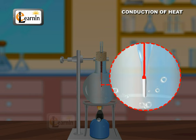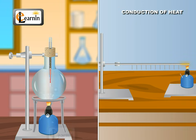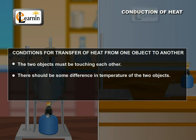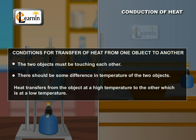So, the level of mercury does not increase further. Two conditions are to be fulfilled to transfer heat from one object to another by conduction. They are: 1. The two objects must be touching each other. 2. There should be some difference in the temperature of the two objects. Heat transfers from the object at a high temperature to the other which is at a low temperature.